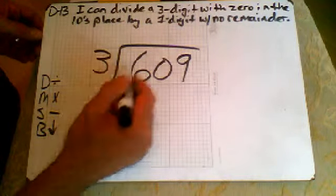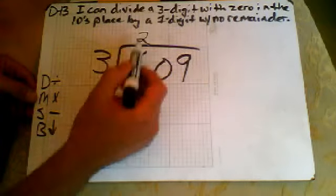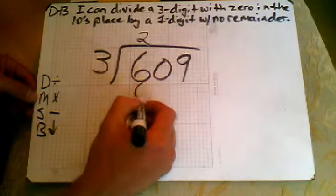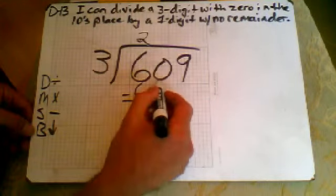So let's see here. Six divided by three is going to be two. Then we're going to multiply. Two times three is six. Then we're going to subtract, get a zero. Then we're going to bring down our zero.